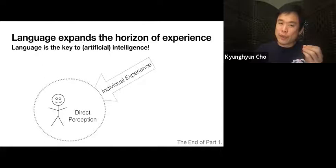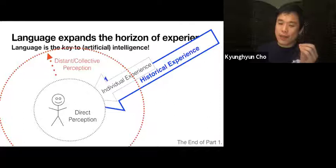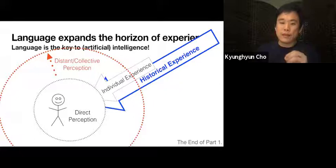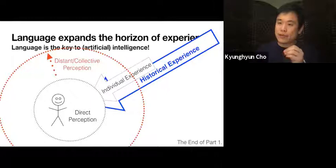In other words, language is the key to intelligence. And in particular for artificial intelligence, language is going to serve as the key — because artificial intelligence does not have many generations over which it can accumulate experience. We need to provide AI systems with our experience that has accumulated in the form of language. Language expands the horizon of experience both spatially as well as temporally. This makes studying and researching natural language in the context of artificial intelligence very, very interesting. This ends the first part of the lecture. From the second part, we're going to go deeper into what it means to build an AI system that can deal with natural language.